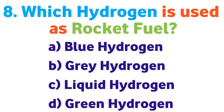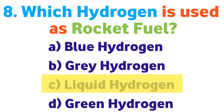Question number eight: Which hydrogen is used as rocket fuel? Option A: Blue Hydrogen, B: Gray Hydrogen, C: Liquid Hydrogen, D: Green Hydrogen. Correct answer is C: Liquid Hydrogen.